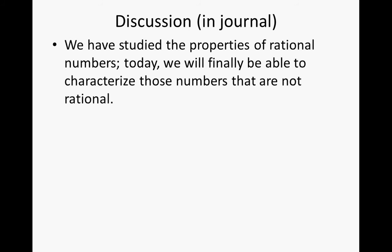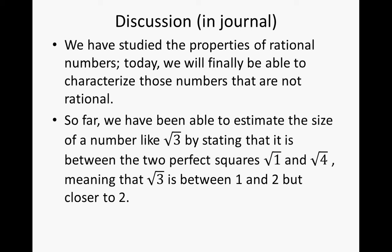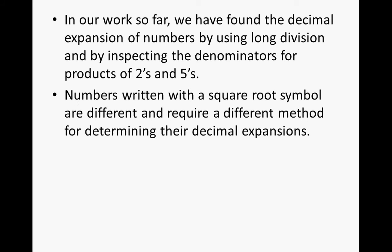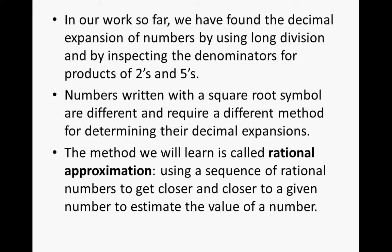We have studied the properties of rational numbers. Today we will finally be able to characterize those numbers that are not rational. So far, we've been able to estimate the size of a number like the square root of 3 by stating that it is between two perfect squares — square root of 1 and square root of 4 — meaning that square root of 3 is between 1 and 2, but closer to 2. Numbers written with the square root symbol require a different method called rational approximation — using a sequence of rational numbers to get closer and closer to a given number.